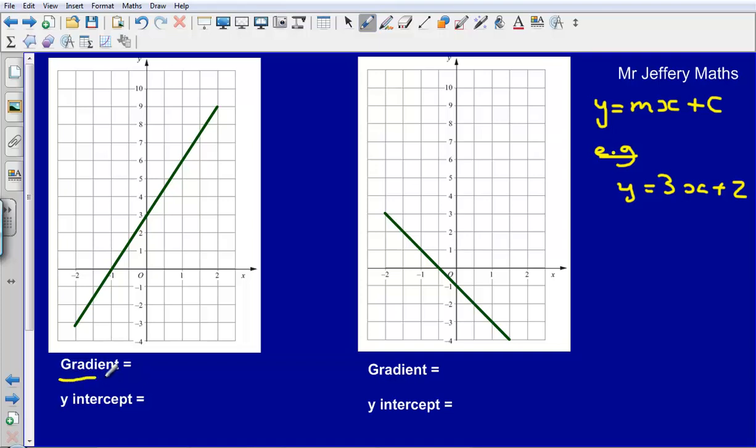The gradient, this word here simply means how steep the graph is, and the y-intercept is just where is it crossing the y-axis.